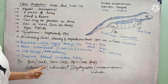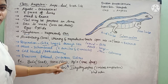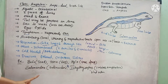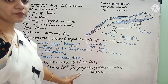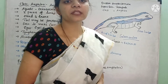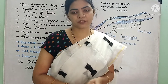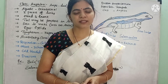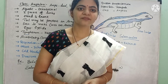Examples are Bufo (toad), Rana (frog), Hyla (tree frog), Salamandra (salamander), and Ichthyophis (limbless amphibian). With this we have completed the general characters of amphibians. If you like this video, please like, share and subscribe to the channel — Lata Akula Biology Tutorial. Thank you.